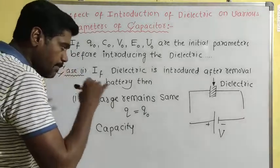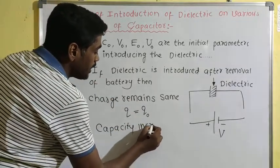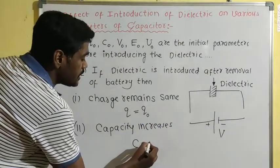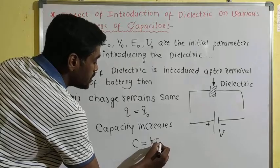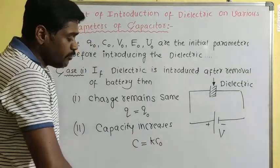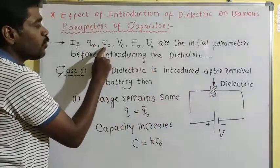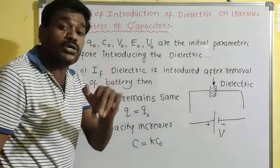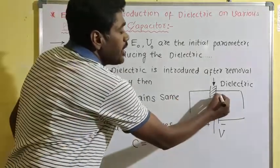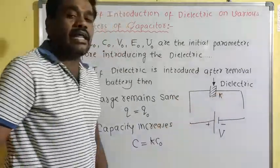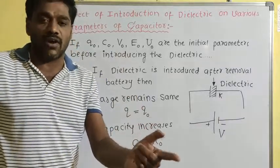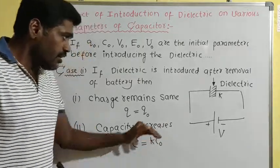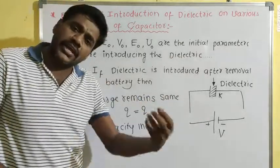The second point: capacitance always increases, whether you keep the battery connected or remove it — capacitance always increases. The new capacitance C = k·C₀, where k is the dielectric constant of the dielectric material, and k is always greater than one. That is why capacitance increases. This is the same in both the battery-removal case and the battery-connected case.